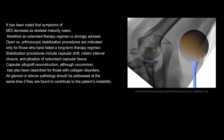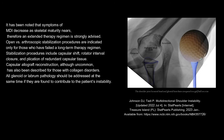Open versus arthroscopic stabilization procedures are indicated only for those who have failed a long-term therapy regimen. Stabilization procedures include capsular shift, rotator interval closure, and plication of redundant capsular tissue. Capsular allograft reconstruction, although uncommon, has also been described for those with collagen disorders. All glenoid or labrum pathology should be addressed at the same time if they are found to contribute to the patient's instability.